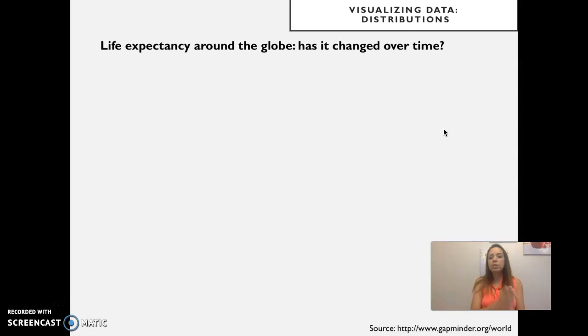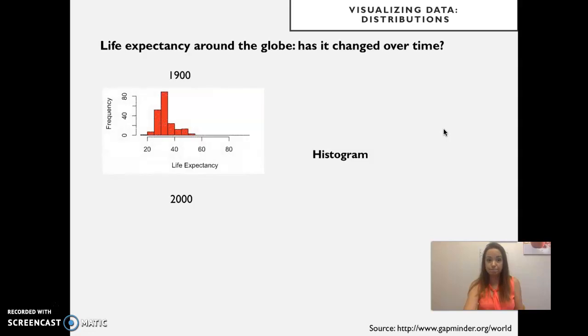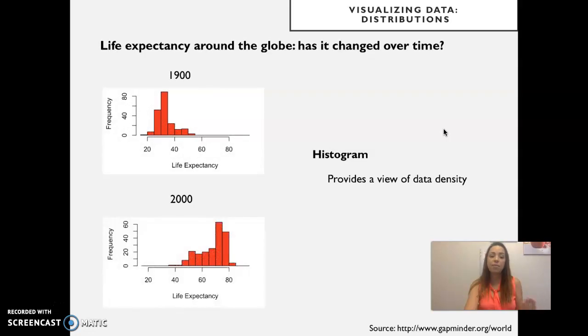So when we were engaging with the question, how has life expectancy changed over time, we started by looking at histograms as a way to visualize the data distributions. And we created these histograms using the ggplot function, and I told you that it provides a view of the data density around each one of the data ranges. For the x-axis, you have your variable that you want to understand. And on the y-axis, you have the count, how frequently you've observed a particular range of values in your data set.